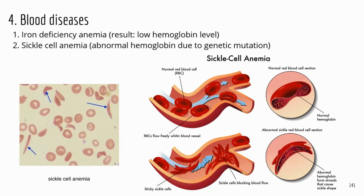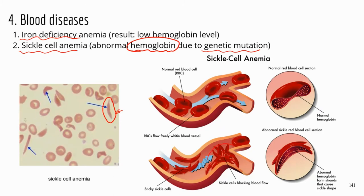Let's look at some blood diseases related to red blood cells. The first is iron deficiency anemia, which we already talked about. The second is sickle cell anemia, which is caused by a genetic mutation in the gene that codes for hemoglobin. Because of the mutation, patients produce abnormal hemoglobin, which leads to sickle-shaped red blood cells. These sickle-shaped cells tend to be very sticky and like to clump, often blocking small blood vessels such as capillaries. This blocks blood flow, so tissues and cells downstream don't get enough oxygen, which can lead to excruciating pain in sickle cell anemia patients.